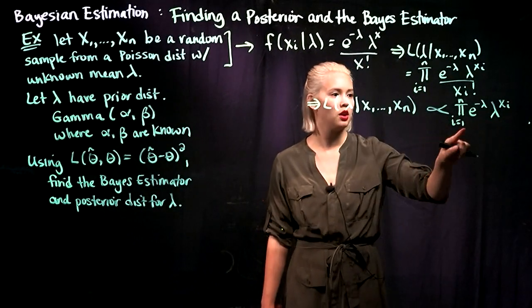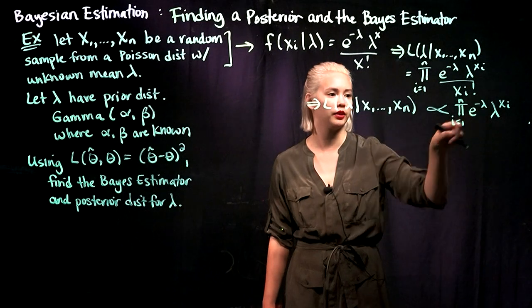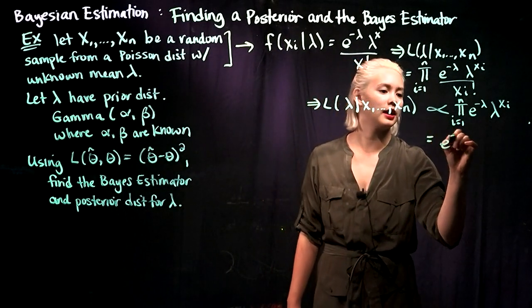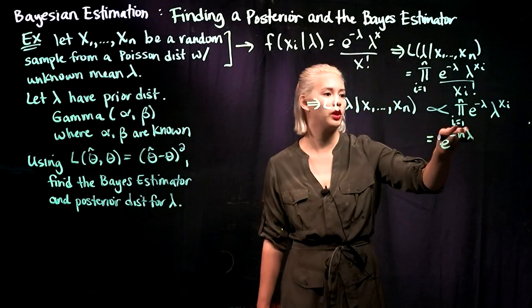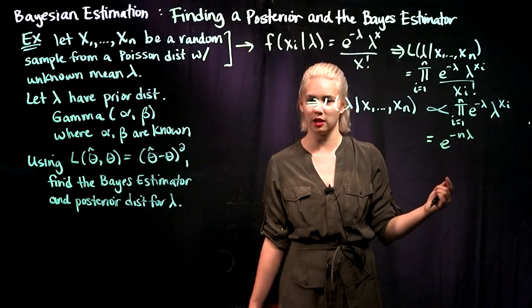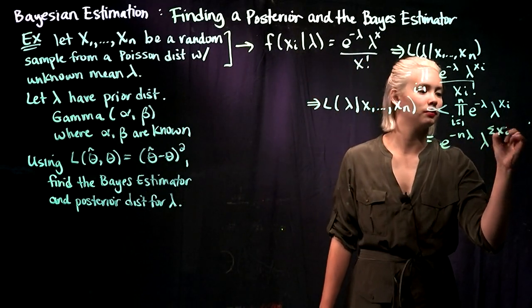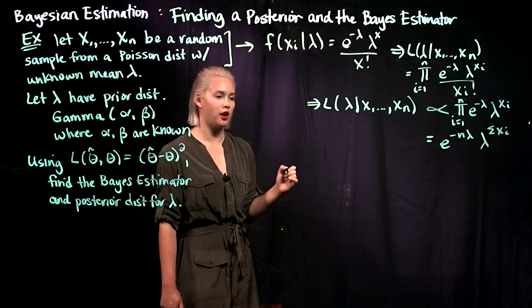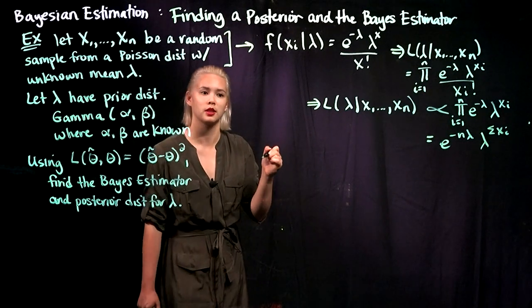Let's simplify one more step. If we're multiplying e to the negative lambda n times, that equals e to the negative n lambda. And the product of lambda to the xi is the same as lambda to the sum of the xi's. So now we have our simplified likelihood.